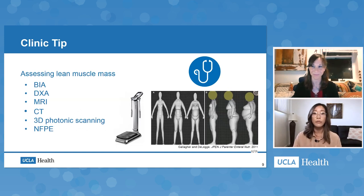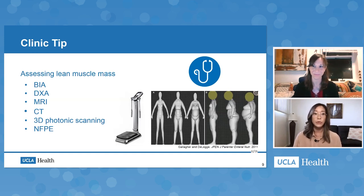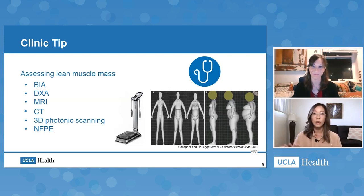CT scans performed prior to radiation therapy also have weight limitations. 3D photonic scanning is easy to use and can accommodate higher weights, but isn't widely available. The nutrition focused physical exam, or NFPE, is what dietitians use to support diagnosing malnutrition. A major drawback is that it's subjective, but it is easily accessible. Physical signs of malnutrition can be identified in obese patients — you can inspect and palpate the temporal muscle, the clavicles, and the shoulder muscles to assess for signs of muscle depletion, as these upper body muscle groups tend to exhibit earlier signs.